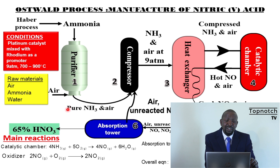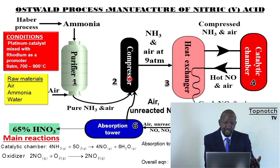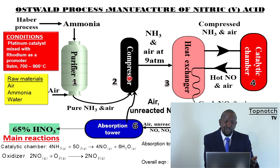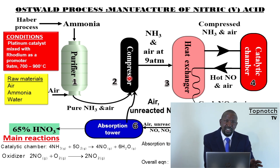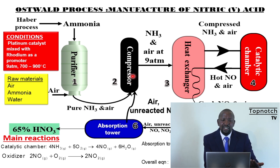The purified ammonia and air are taken to the compressor. In the compressor, the gases are compressed to the required pressure. Remember, these are reversible reactions. You require high pressure because the reactants here are gases, and you need to compress them so that the particles are brought closer to each other, leading to more effective collisions and therefore increasing the rate of reaction. That's why we need high pressure.